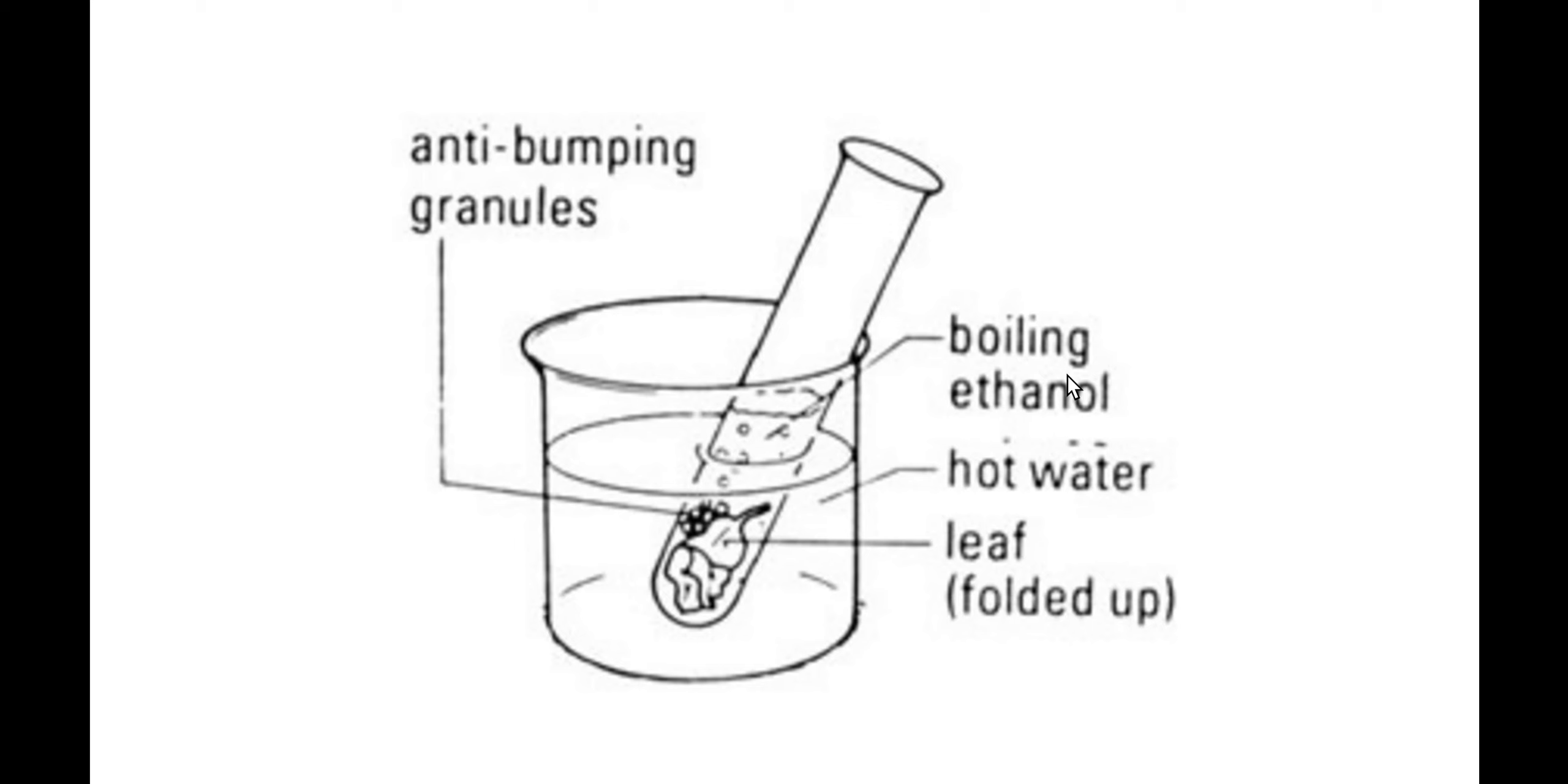That test tube will sit in a beaker of hot water which will act as a water bath to heat the ethanol up, and that will continue to remove the chlorophyll from the leaf. What will happen is we'll see the methylated spirits turn a green color and the leaf will end up looking quite bleached.